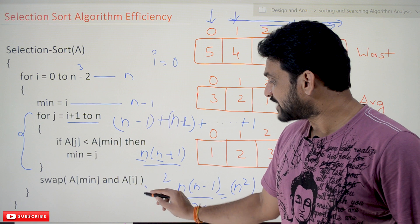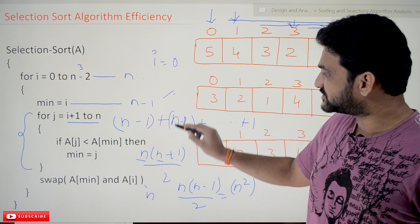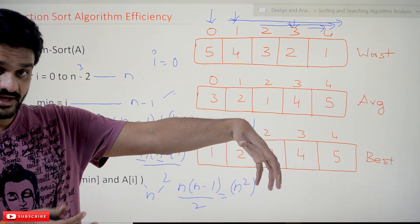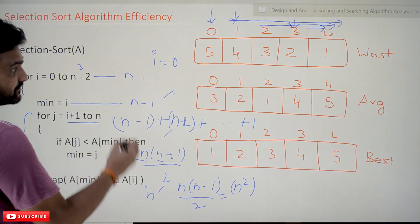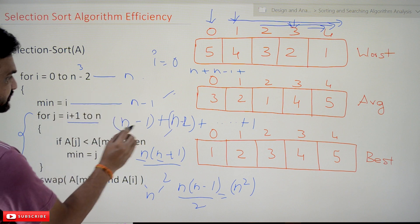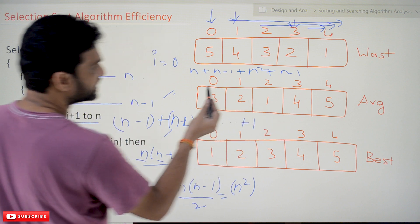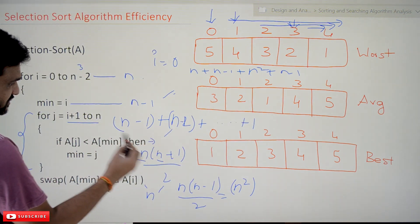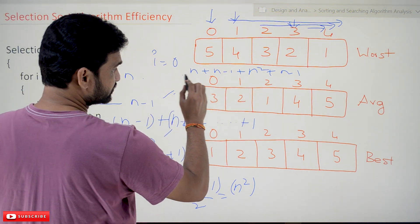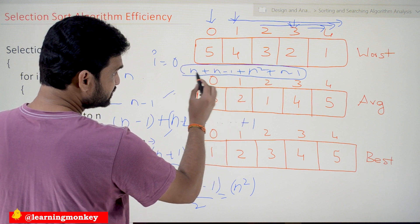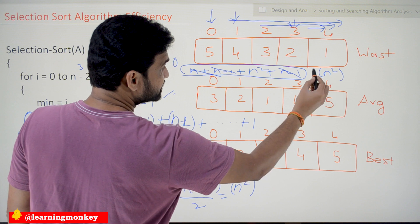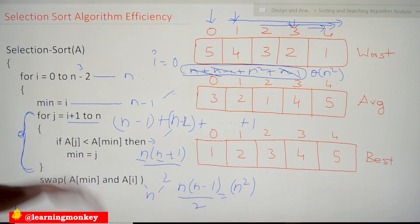The swapping step iterates n times. Summing all the step counts — n, n−1, n², n−1, and so on — we need to consider only the higher-order term. The lower-order terms are negligible and discarded. On the whole, the dominant term is n², so the efficiency of this algorithm is n².